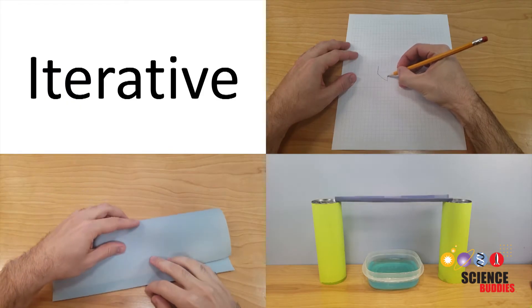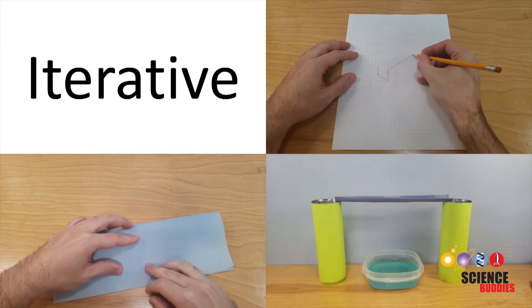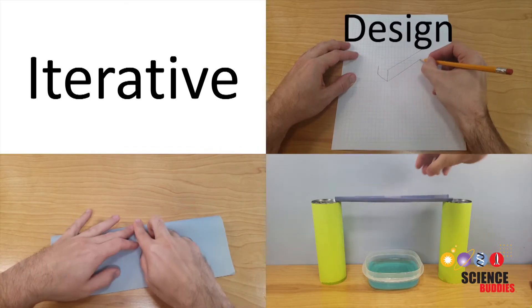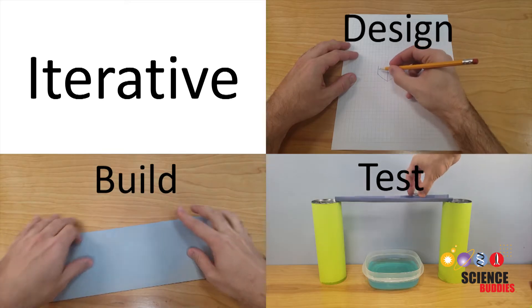The engineering design process is often iterative, meaning you might cycle through the steps of designing, building, and testing something multiple times.